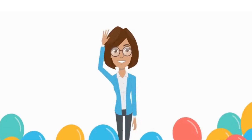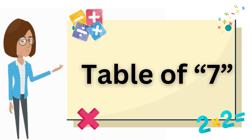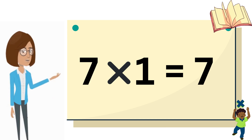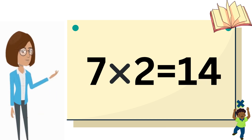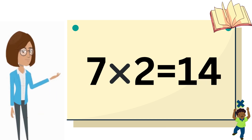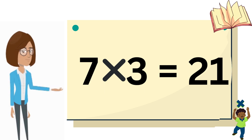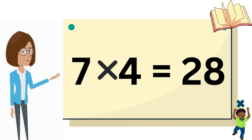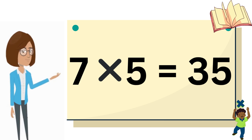Hello everyone, welcome back to my channel. Today we are going to learn the table of seven. Seven ones are seven, seven twos are fourteen, seven threes are twenty-one, seven fours are twenty-eight, seven fives are thirty-five.